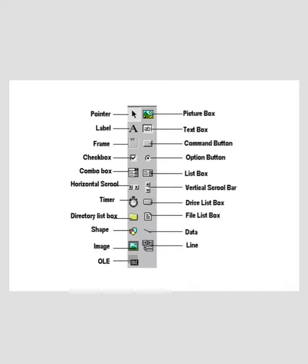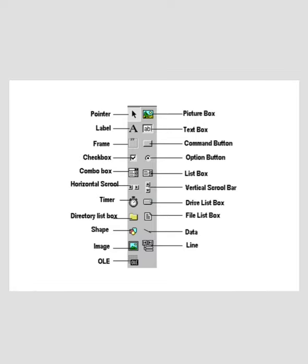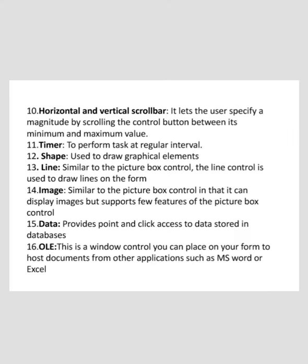The next is Image and Data. Image is similar to the Picture Box control in that it can display images, but it supports fewer features of the Picture Box control. Data provides point-and-click access to data stored in databases. The next is OLE — Object Linking and Embedding — which is a window you can place on your form to host documents from other applications such as MS Word or Excel.